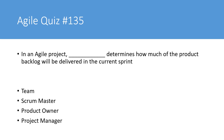Today's question is filling the blank: in an agile project, blank determines how much of the product backlog will be delivered in the current sprint. So the question is: who determines how much of the product backlog will be delivered in the current sprint? They're talking about the sprint backlog. The choices are: team, Scrum Master, product owner, or project manager.